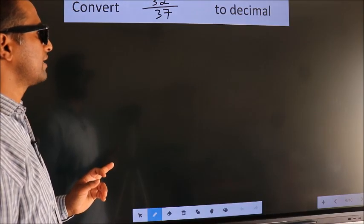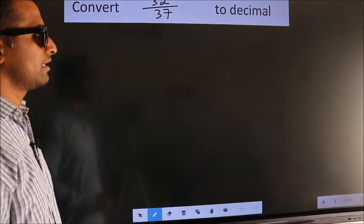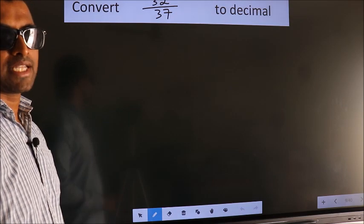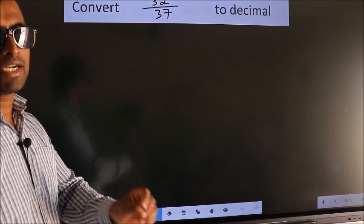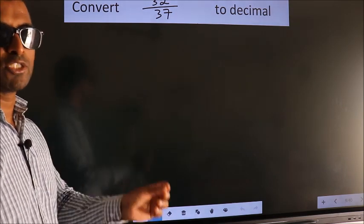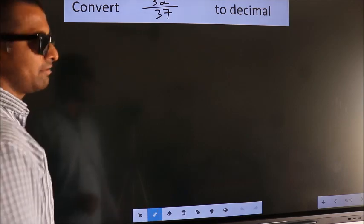Convert 32 by 37 to decimal. To convert this to decimal we have to divide, and to divide we should frame it in this way.